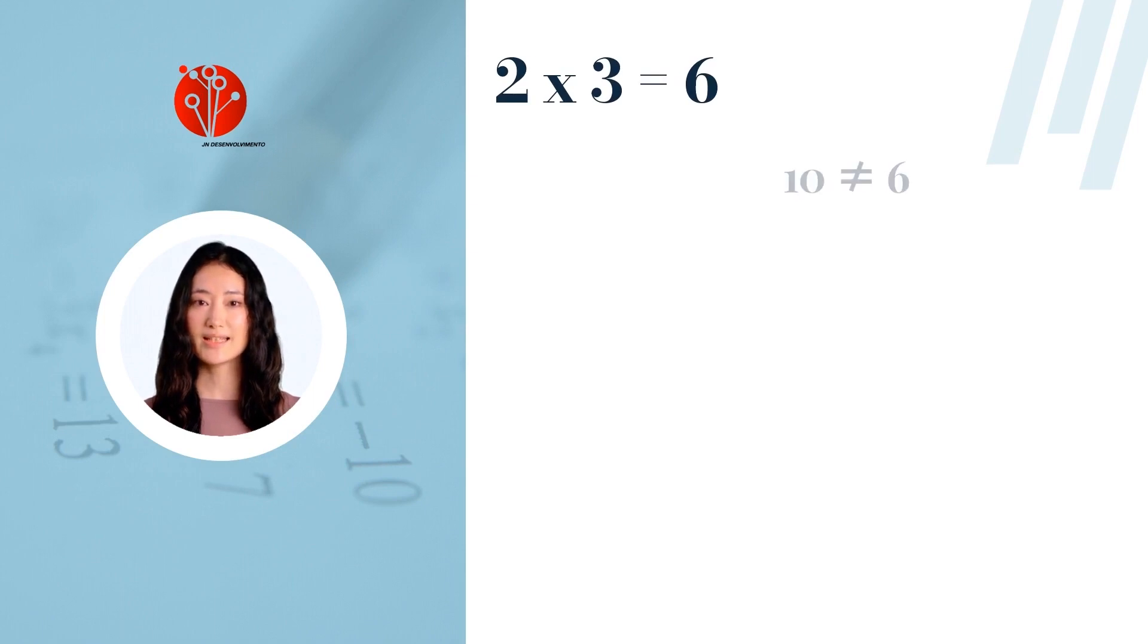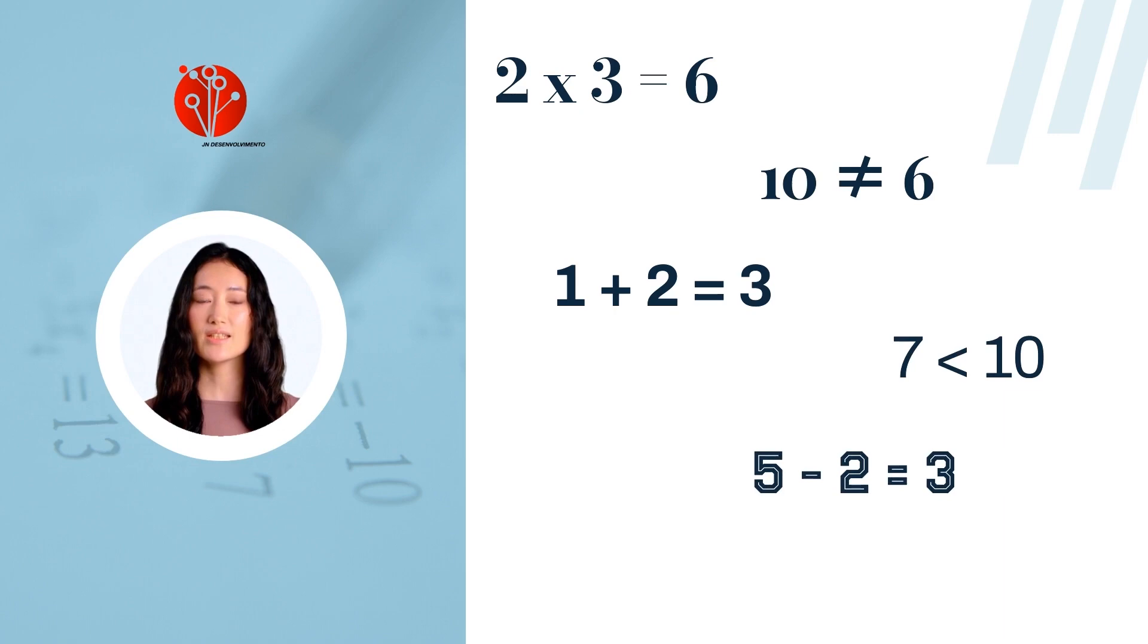2 times 3 is 6. 10 not equal to 6. 1 plus 2 equal to 3. 7 less than 10. 5 minus 2 equal to 3. 12 divided by 3 is 4.